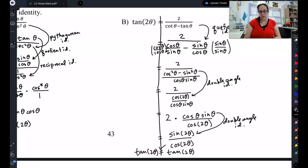Cosine squared minus sine squared is a double angle identity for cosine of 2θ. So I changed that. Then I did keep switch flip - keep the numerator, switch to multiplying, flip the denominator. And I saw that,